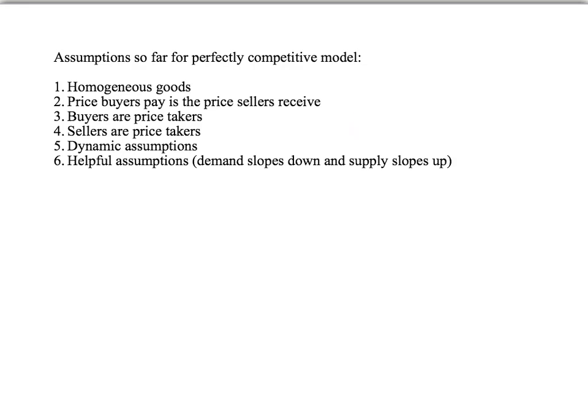Let's start by reminding ourselves of the assumptions we've used so far. For the perfectly competitive market model, we assumed homogenous goods — whether they were apples, gym memberships, whatever — one well-defined product. Second, we assumed that the price buyers pay is the price sellers receive, or better to say, we used to assume that. We don't assume that anymore — we got rid of that when we started looking at a sales tax.